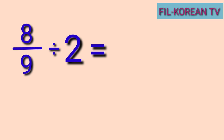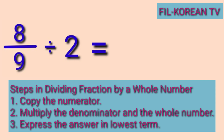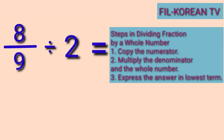To solve this problem, we need to follow the steps in dividing a fraction by a whole number. This is a shortcut method — a shorter way of dividing a fraction by a whole number in which we don't need to get the reciprocal of the divisor.